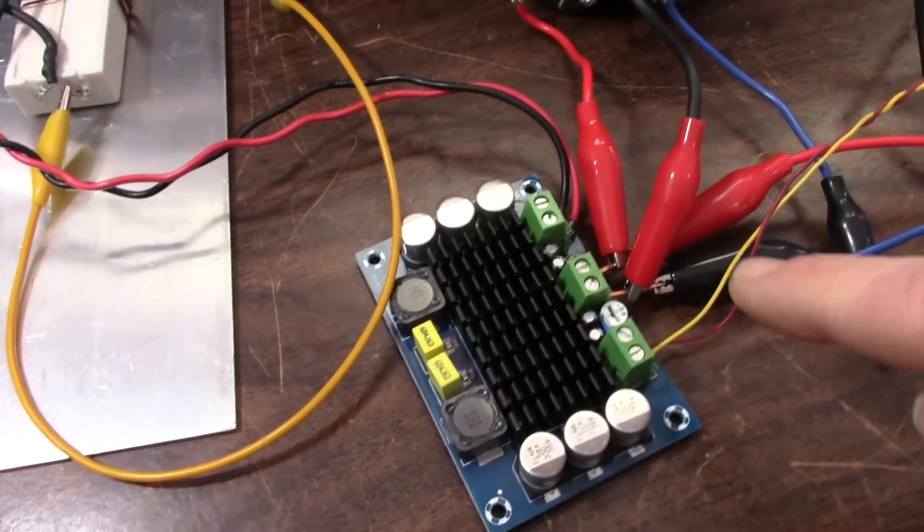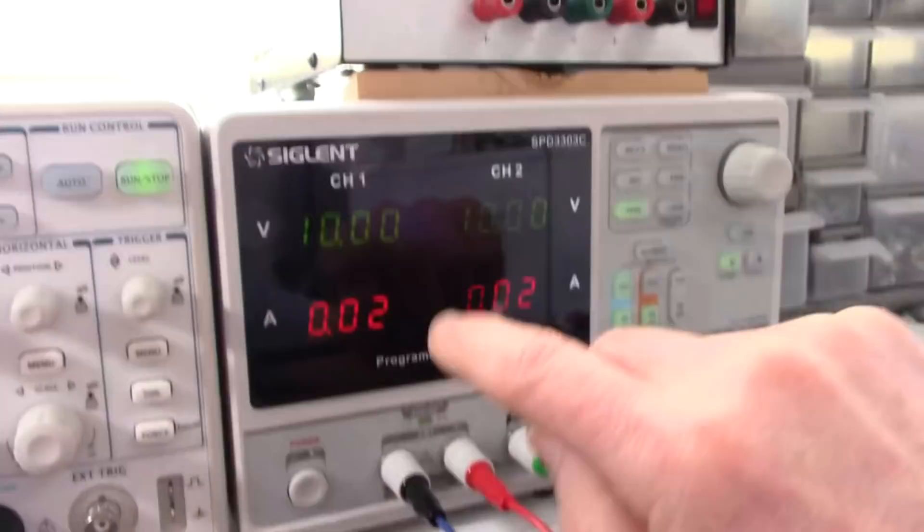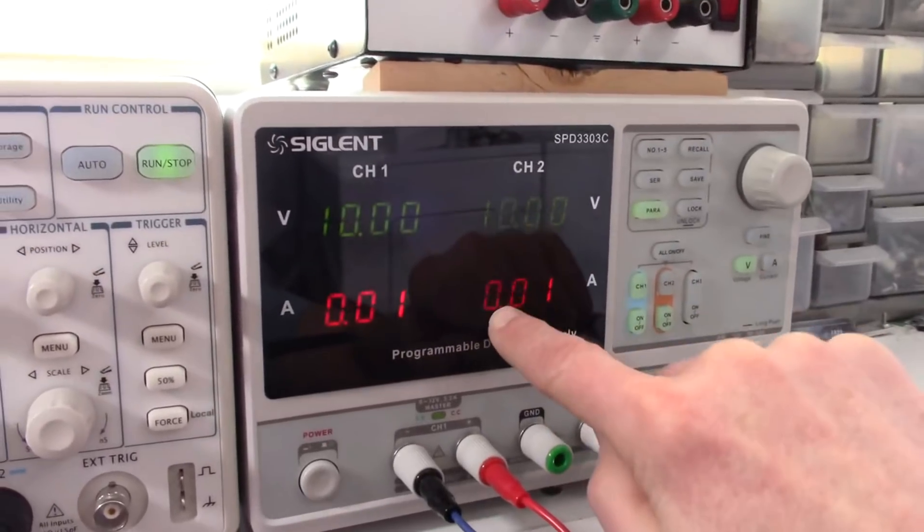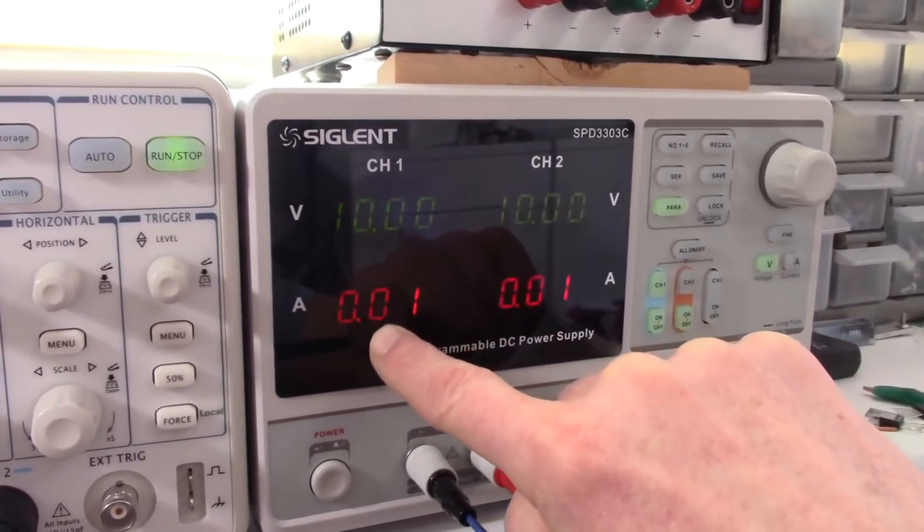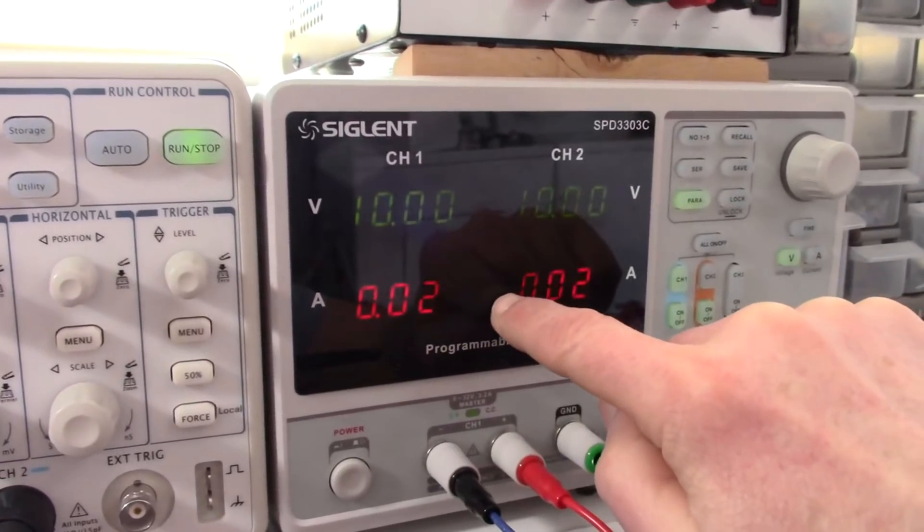Okay, I connected the amplifier up, going to the supply here. Because the supply can only put out 3.2 amps per channel, I have it paralleled so I can get up to 6.4 amps.